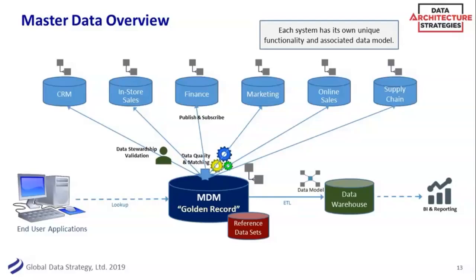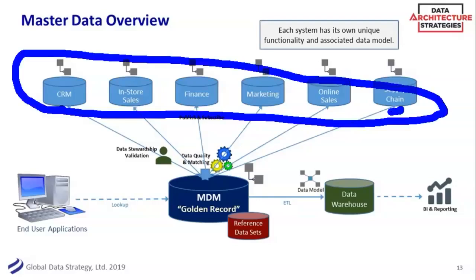You might have customer data in your CRM, your store systems, your online stores, your in-store sales. Those customers are probably also in your finance system. Marketing is sending things out to your customer list, supply chain is shipping things to those people. All of these systems have their own view of what customer looks like — they all have their own way to store customer information. Part of the biggest challenge is getting a single common data model.